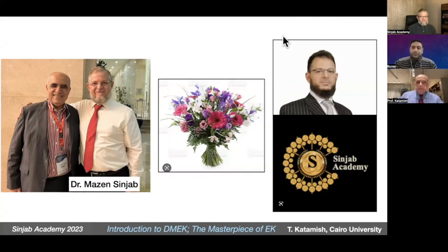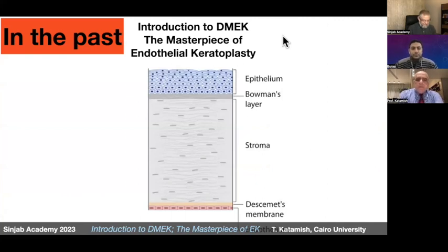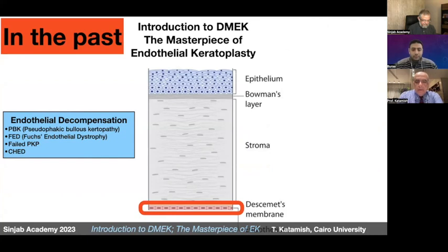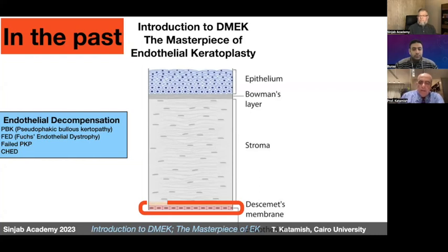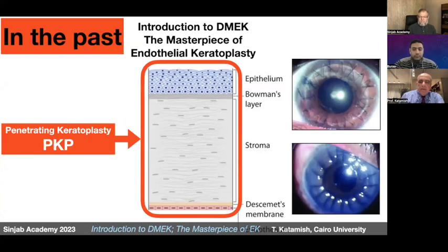I will speak about an introduction to DMEK — the masterpiece of endothelial keratoplasty. In the past, when we had just a disease in the endothelium with the whole cornea healthy — for example, in cases of endothelial decompensation, the most common causes being pseudophakic bullous keratopathy and Fuchs endothelial dystrophy — we had no option apart from replacing the whole cornea by doing penetrating keratoplasty, in spite of knowing that the whole cornea was normal apart from these tiny endothelial cells.